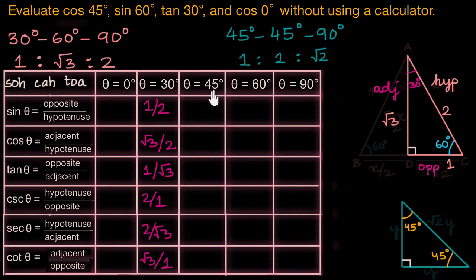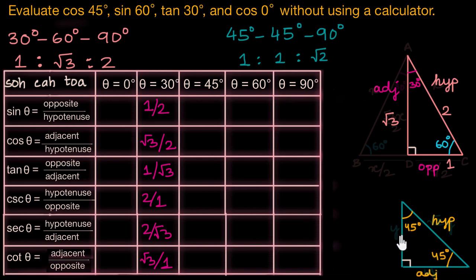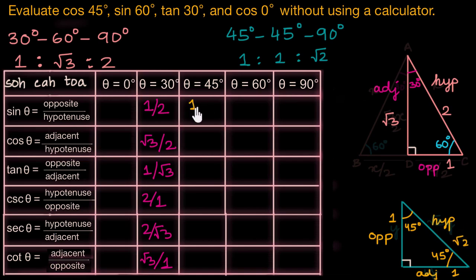Now let's talk about theta equals 45 degrees. For this we'll need our 45-45-90 triangle. You can take either of these angles — it wouldn't matter because the ratio of the two legs is always equal since those two sides are always equal. The side opposite the right angle is the hypotenuse. The adjacent and opposite sides both have length 1, and the hypotenuse is √2. So sine 45 degrees is 1/√2.